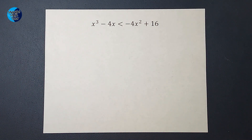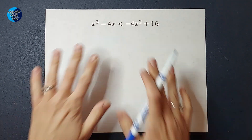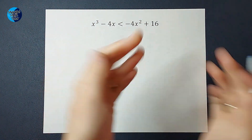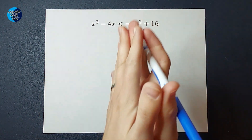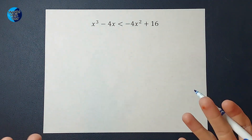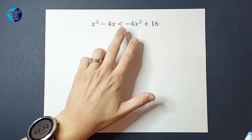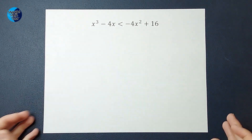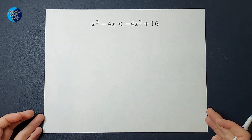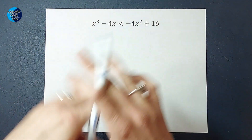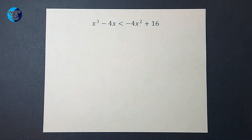Hey guys, we are looking at polynomial inequalities. When we have things like equations, we have an equal sign and we're looking for what X equals, but in this case we have an inequality, so we are looking for a range of numbers that will work for X.